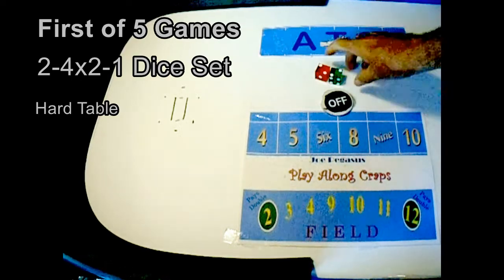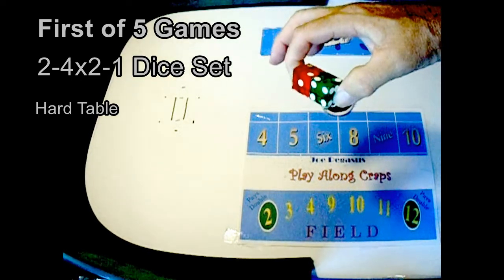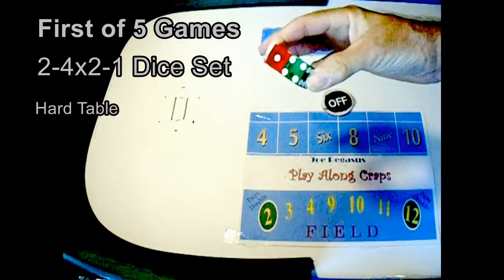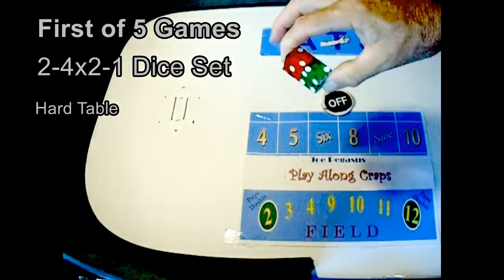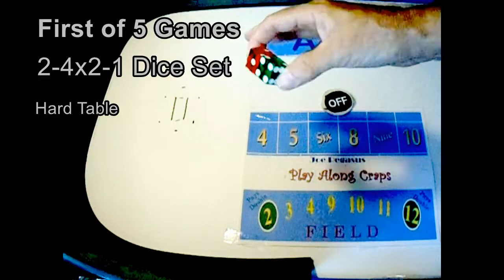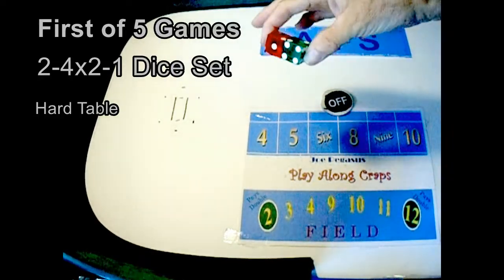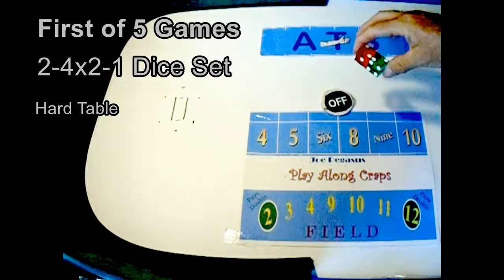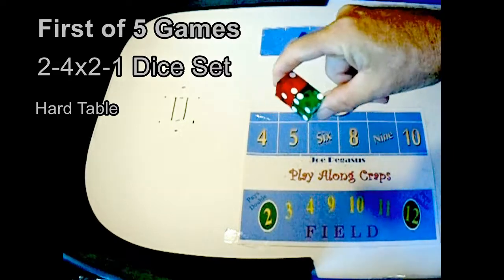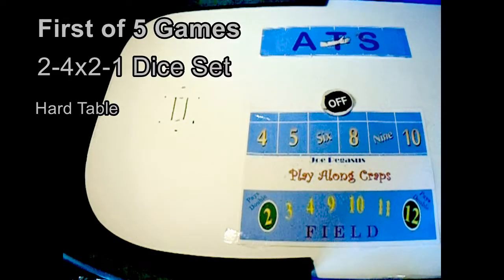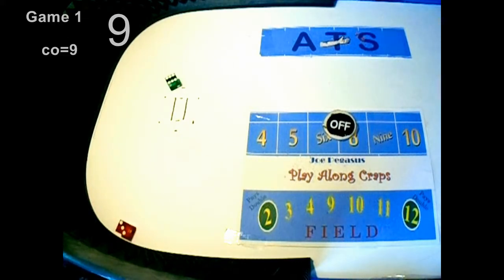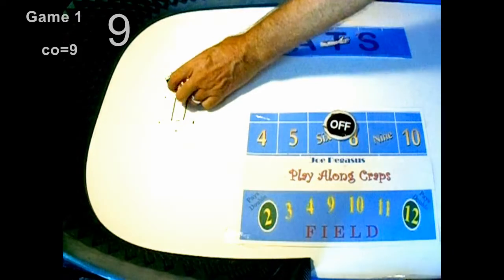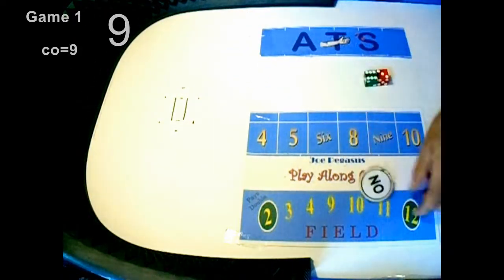Today we're playing the two four by two one dice set on a hard table, see how it goes. We're going to play five games. I get the feeling it's going to be an okay set, as long as you don't lose your money it's okay.